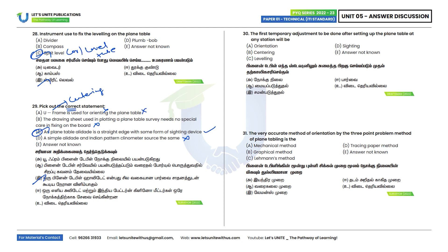Thirtieth question: What is the first temporary adjustment to be done after setting up the plane table at any station? The order is: first leveling, second centering, third orientation, fourth sighting. So the first is leveling. Option C is the correct answer.